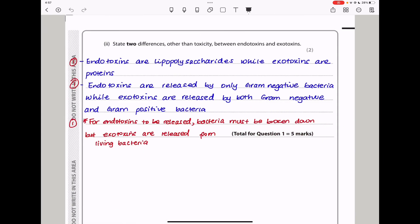Moving on, they say state two differences other than toxicity between endotoxins and exotoxins. The nature of these endotoxins and exotoxins is different. For example, the endotoxins are lipopolysaccharide, lipids and carbohydrate, while exotoxins are proteins. Endotoxins are released by only gram-negative bacteria, while exotoxins are released by both gram-negative and gram-positive bacteria. So this brings us to the end of question one.